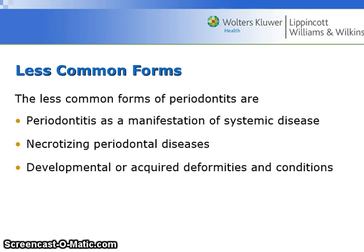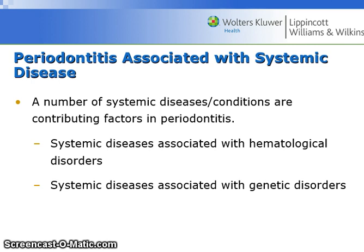The less common forms are periodontitis as a manifestation of systemic disease, necrotizing periodontal diseases, and developmental or acquired deformities and conditions. There are a number of systemic diseases or conditions that are contributing factors in periodontitis, such as those associated with hematological disorders or those associated with genetic disorders.